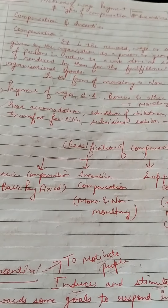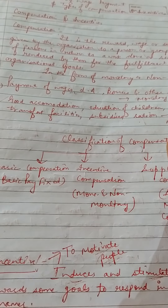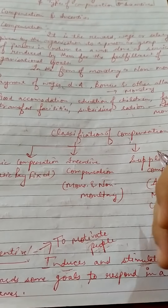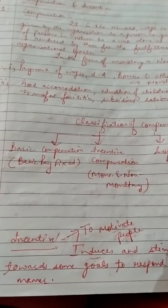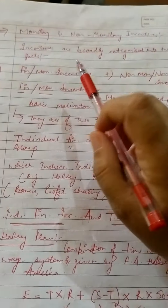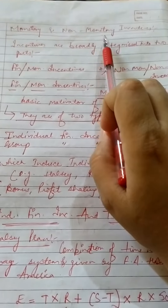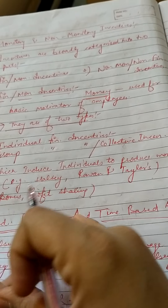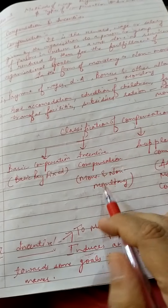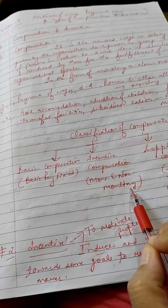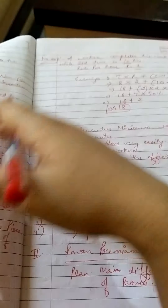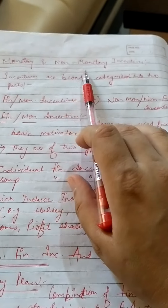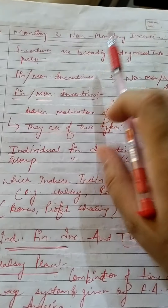Money is important compensation, but money is not the only motivator. Other financial incentives and additional funds can also be used. These are known as financial incentives, which we will discuss under the topic of monetary and non-monetary incentives.